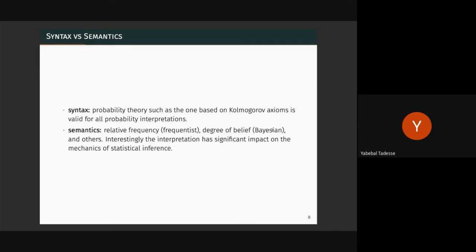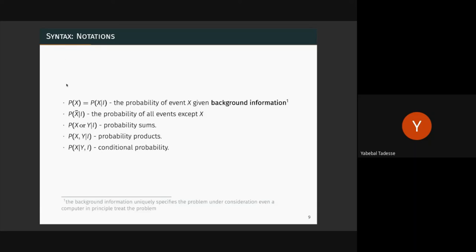Frequentist and Bayesian interpretations are the most important parts of probability — that's what makes probability hard: the semantics part. But you must know the syntax — how to manipulate probability. Once you define what a random variable is, what a probability distribution is, the evolution of a probability distribution is defined by mathematics. Whether Bayesian or frequentist, the syntax will be identical.